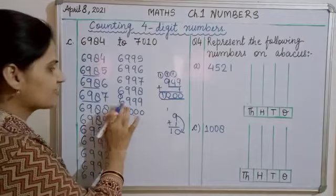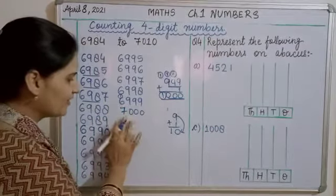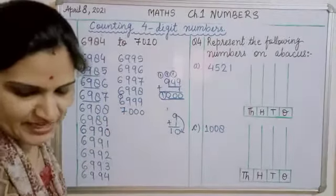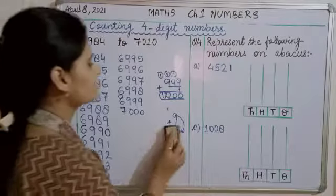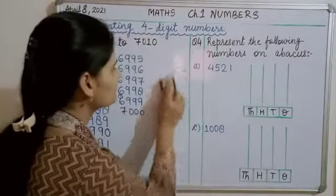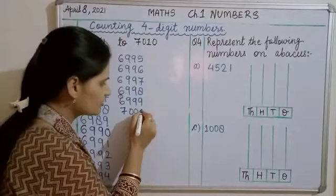So now we get after 6,999, we get 7,000. 7,000 में अगर हम plus 1 करेंगे तो क्या number होगा?